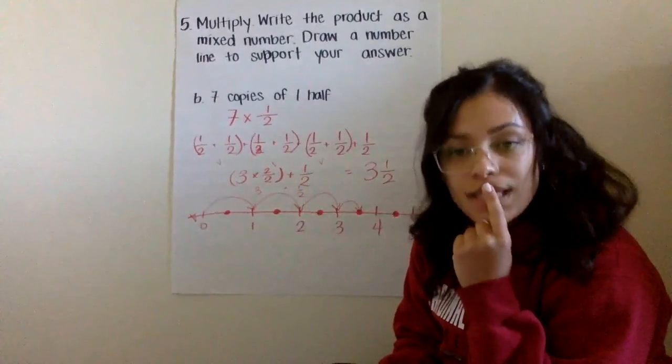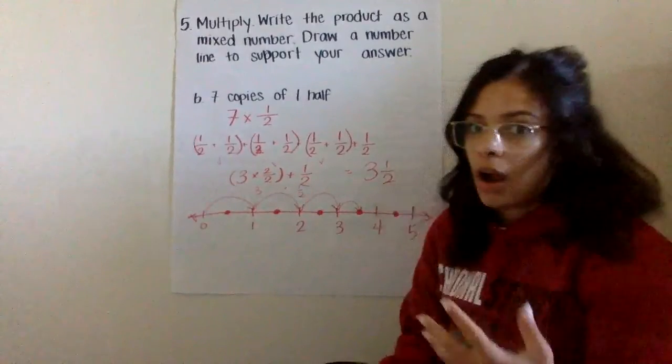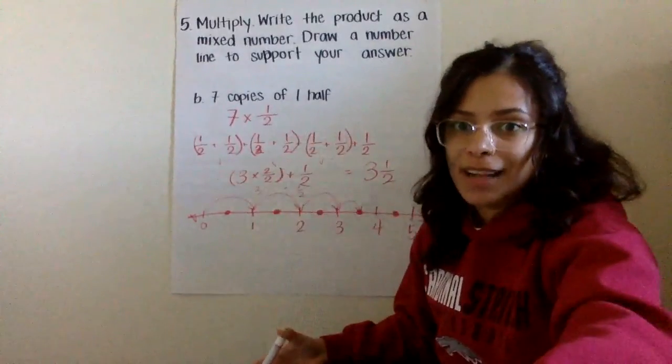You can think about splitting that seven and a half and going, well, three times two is six. So that gets me close. And then I have that other half to go. So there are other ways to do it. But this is what your visuals and your thinking should reflect.